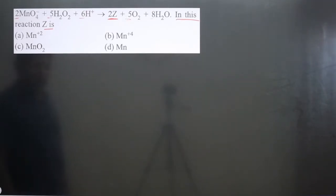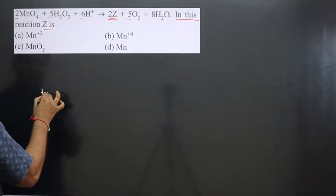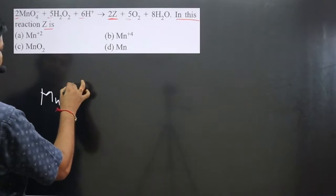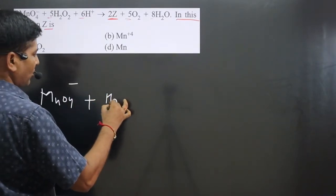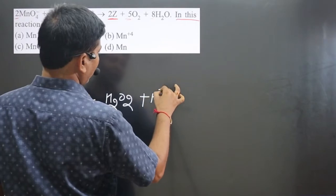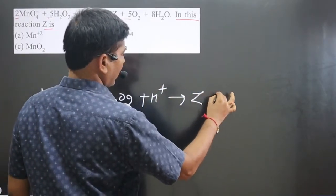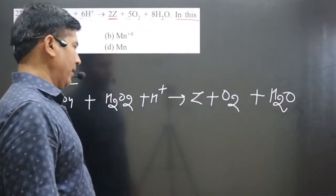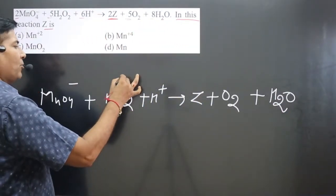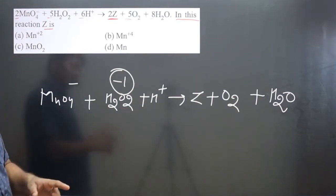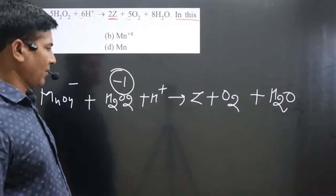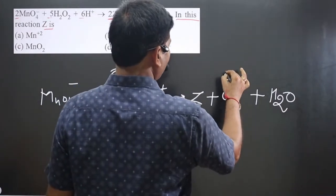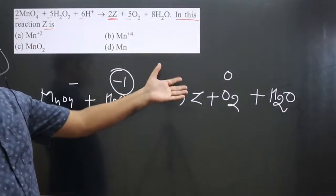Looking at the equation, we have MnO₄⁻ and H₂O₂ on one side, along with H⁺ ions. On the other side, we have Z, O₂, and water. In hydrogen peroxide, oxygen is present in the -1 oxidation number, and in the oxygen molecule (O₂), oxygen is present in the 0 oxidation number because it is a neutral molecule.